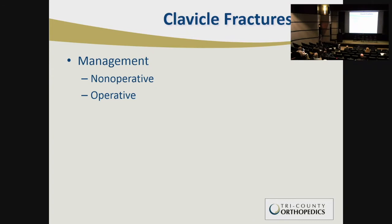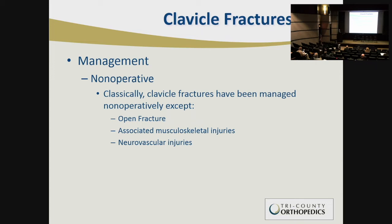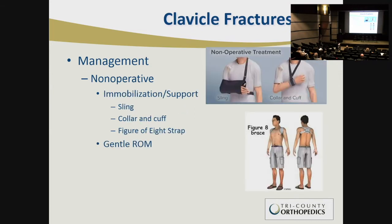In terms of management, there's non-operative and operative management. Classically, these fractures have been managed non-operatively, leading to malunion but with the thought of high function. The real indications for surgery were open fractures, associated musculoskeletal injury in multi-trauma patients requiring early weight bearing, and neurovascular injuries. Non-operative management included sling, collar and cuff, or figure-of-8 strap. The figure-of-8 strap was thought to reduce the fracture into better alignment, but there's really been found to be no difference between a simple sling and a figure-of-8 brace.